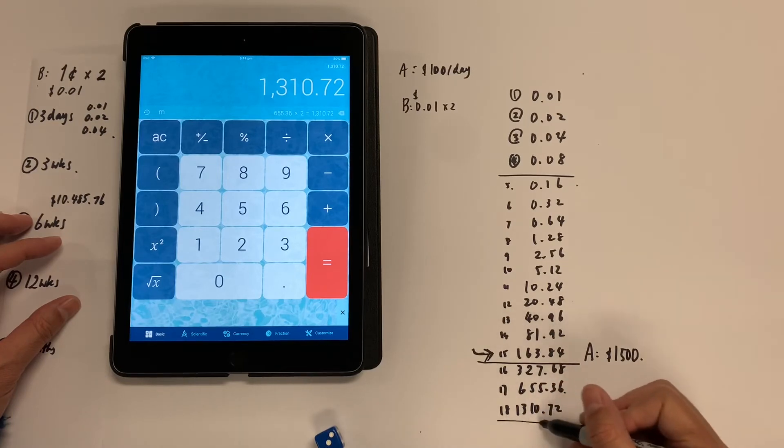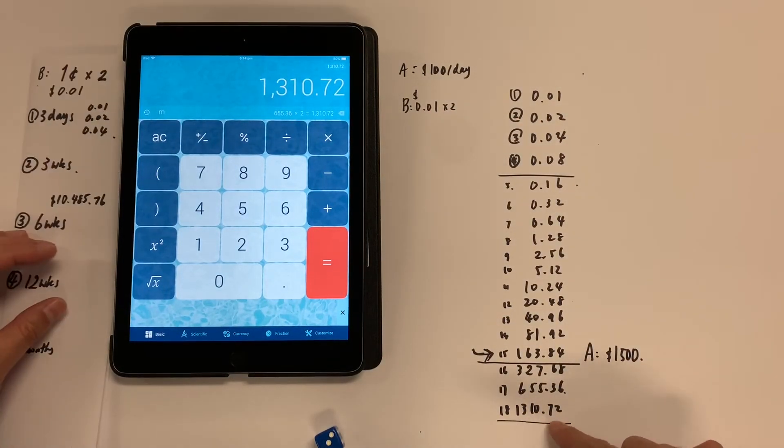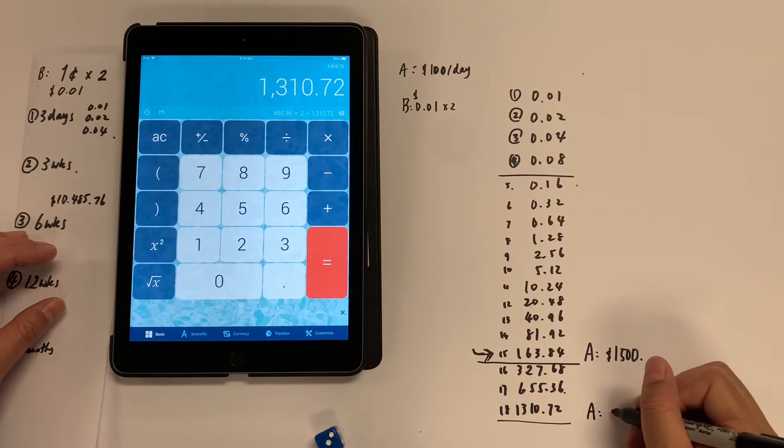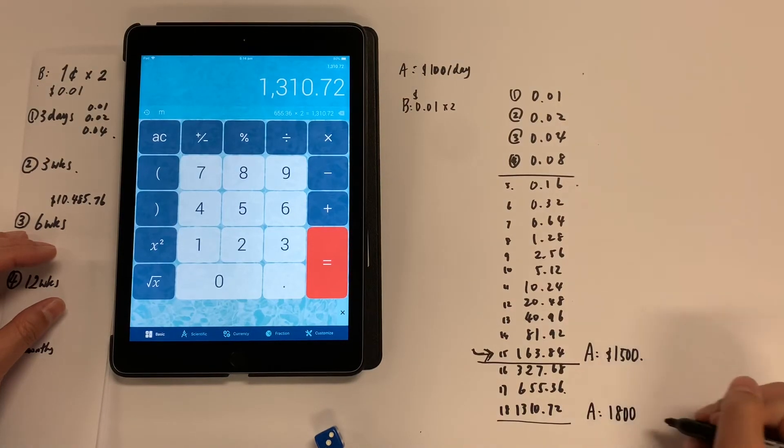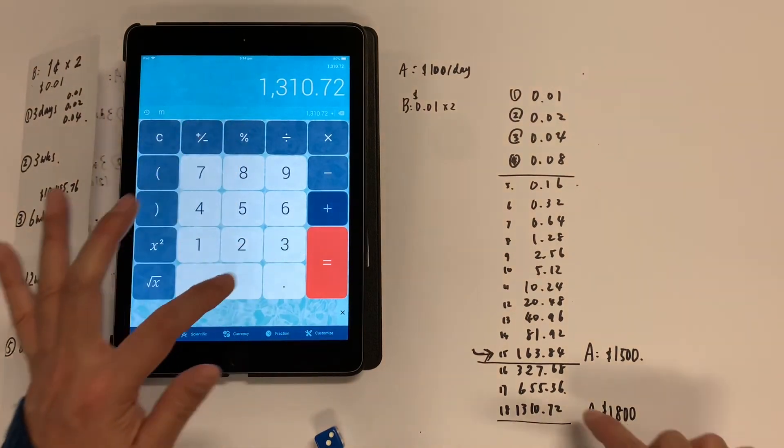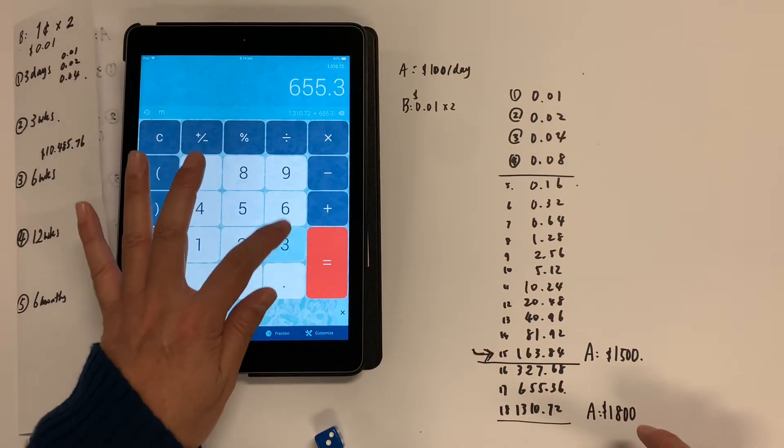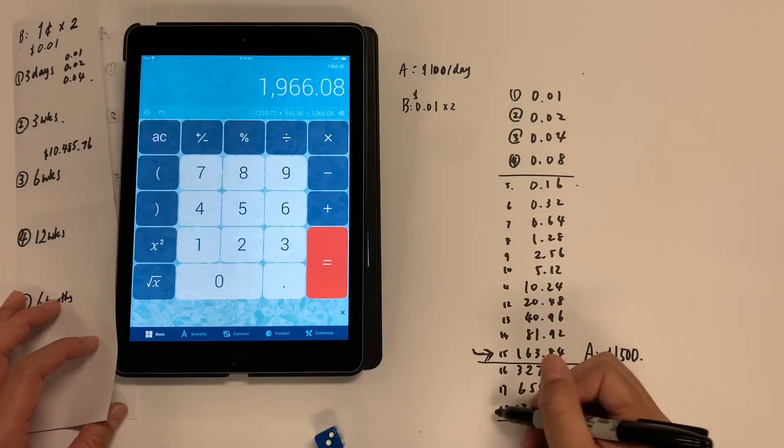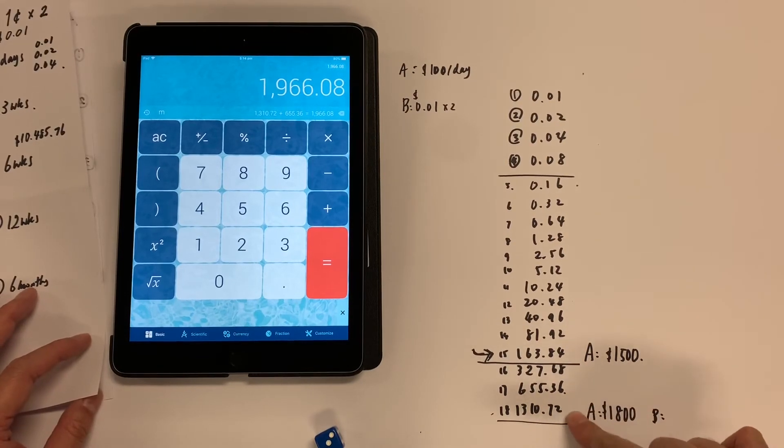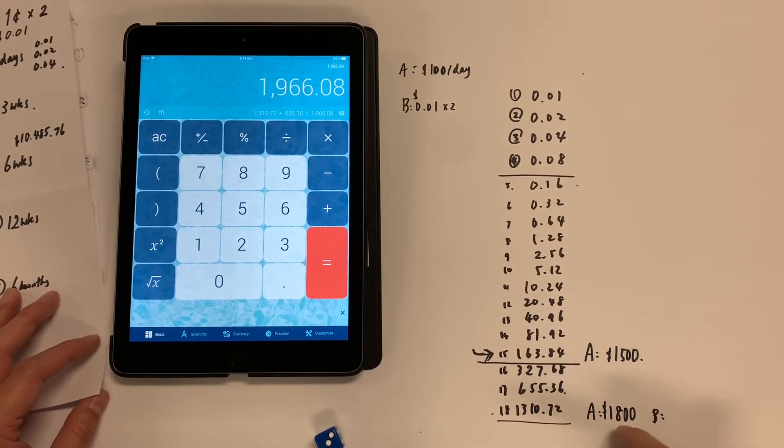So 18th day, the person B has received $1,310.72. By the time, A person must have received $1,800. So let's check 1310.72 plus 655.36. He's gone over. He's clearly gone over by then. But B person, only adding these two, has gone over his money.